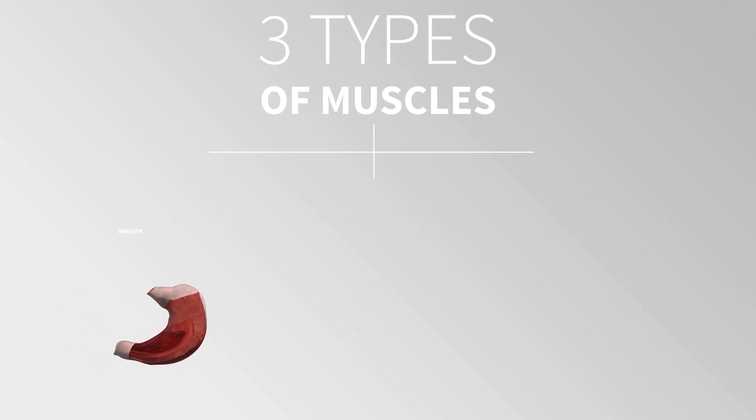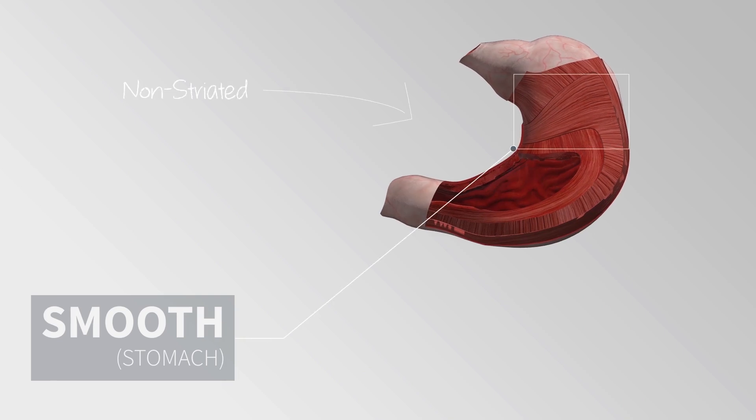Smooth muscles are found in the walls of many organs such as the stomach and in blood vessels. They have a non-striated appearance and contract involuntarily.